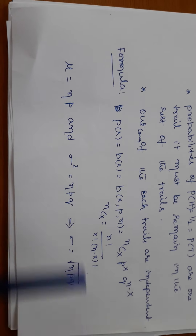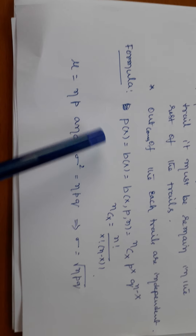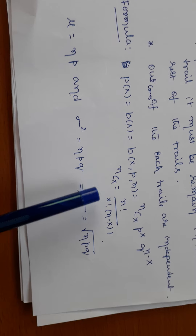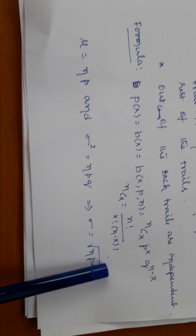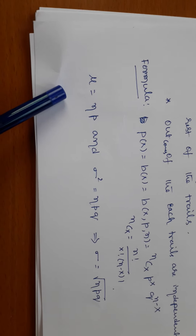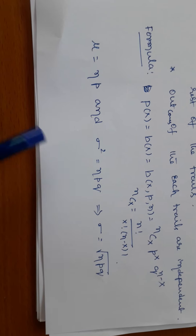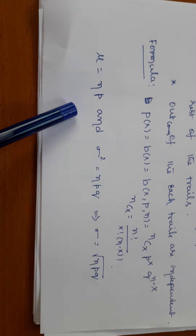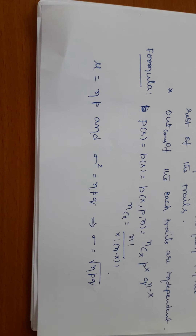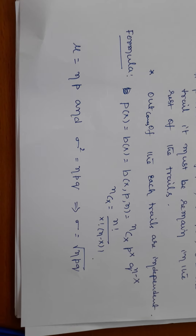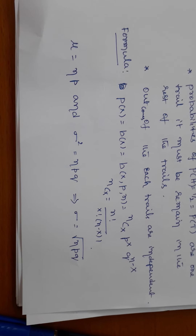To find probabilities in binomial distribution, the probability function is: b(x) = nCx × p^x × q^(n−x), where nCx = n! / (x! × (n−x)!). This can also be denoted as b(x, p, n). At the engineering level, the mean is np, the variance is npq, and the standard deviation is √(npq). We will meet in the next class for problems based on binomial distribution. Thank you very much.